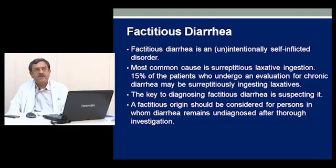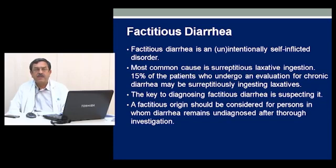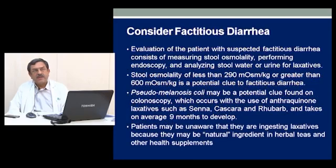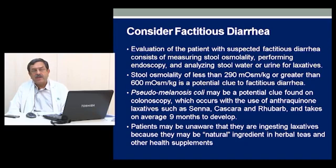Factitious diarrhea is an unintentionally self-inflicted diarrhea disorder. It is most commonly caused by using laxatives available over the counter or even home remedies. A factitious origin should be considered for persons in whom diarrhea remains undiagnosed after thorough investigation. Pseudomelanosis coli occurs because of use of anthraquinone laxatives like Senna and Cascara for more than 6 to 8 months, resulting in diarrhea. Patients may be unaware they are ingesting laxatives because these may be natural ingredients in certain herbs, teas, and other health supplements.